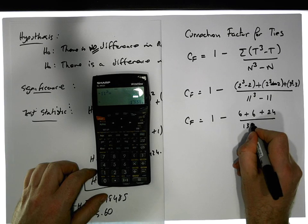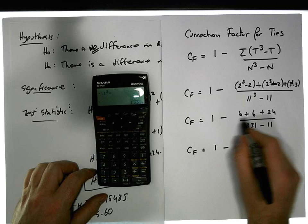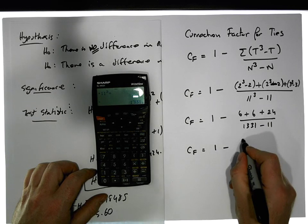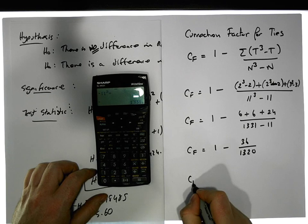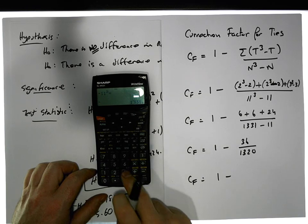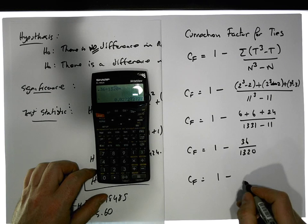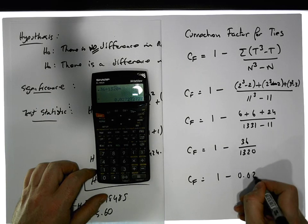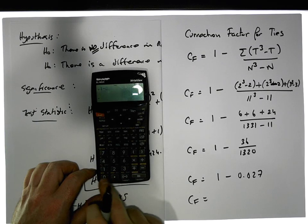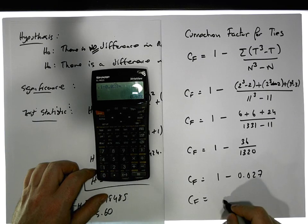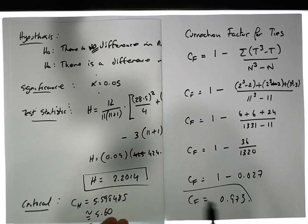Plus 3³ is 27, 27 minus 3 gives us 24, divided by 11³ equals 1331 minus 11. Our correction factor is one minus, we have 36 divided by 1320. We have one minus 0.027, giving us a correction factor of 0.973.